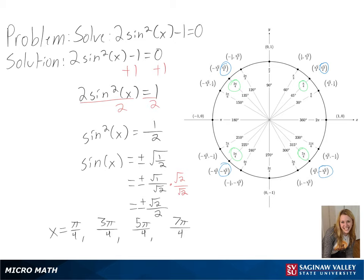We could also continue to add and subtract 2π to all of our values and also get positive or negative square root of 2 over 2.